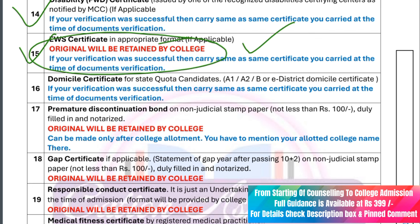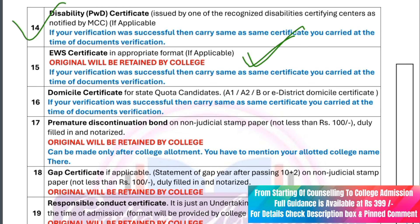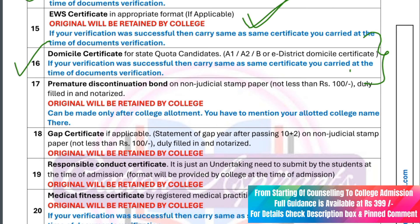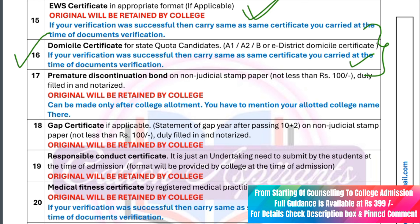I will give you the original EWS certificate to college. This is the Domicile Certificate. The Premature Discontinuation Bond is the original college document — the Premature Discontinuation Bond has a detailed video on the channel.